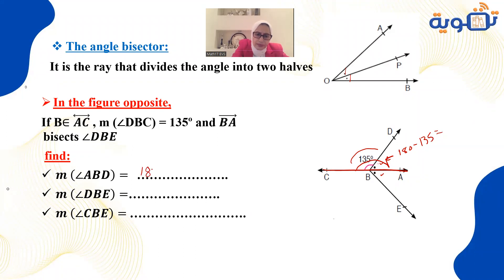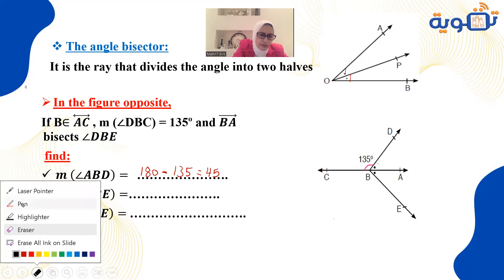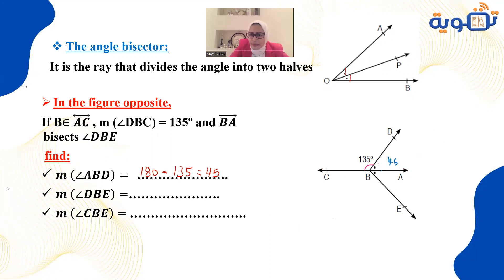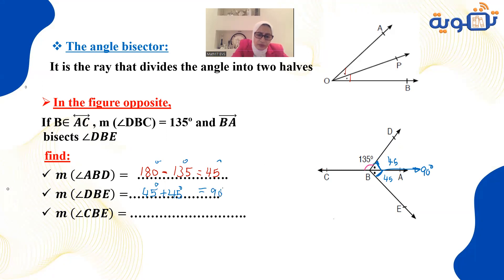So 180 minus 135 equals 45 degrees. Since ray BA bisects angle DBE, both halves are equal — this part is also 45 degrees. Therefore, angle DBE equals 45 plus 45 equals 90 degrees, which is a right angle.